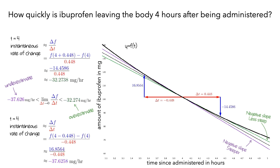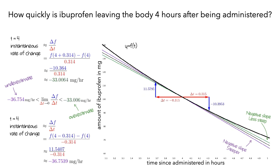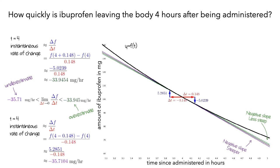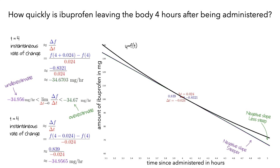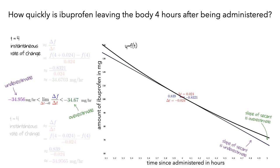As the amount of change in time decreases, the slope of the purple secant line approaches the slope of the black tangent line, although its slope stays more negative than the slope of the black line. Similarly, the slope of the green secant line approaches the slope of the black tangent line, although its slope stays more positive. Now, this limit is between negative 34.956 and negative 34.67 milligrams per hour, which is a much smaller range for our instantaneous rate of change.